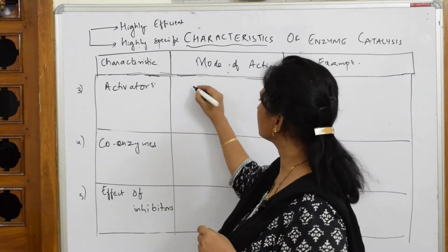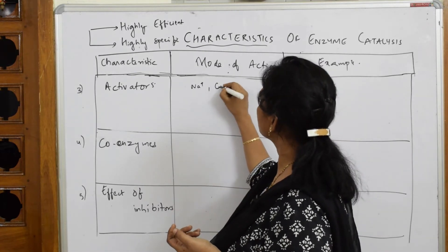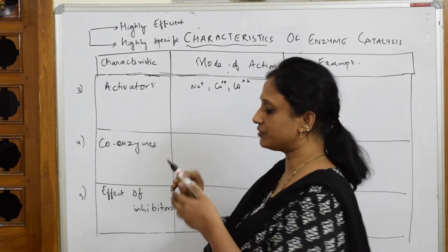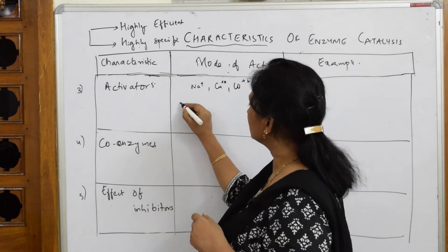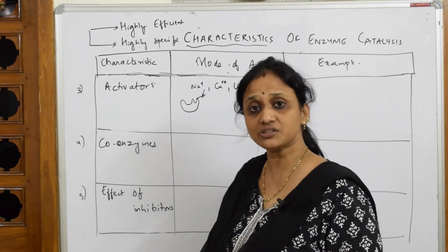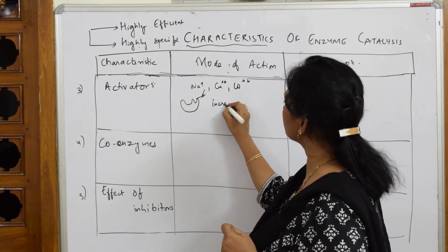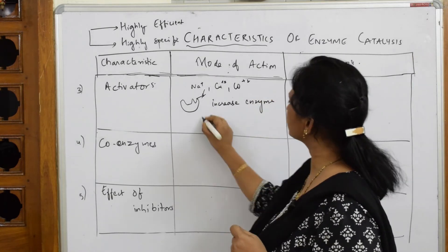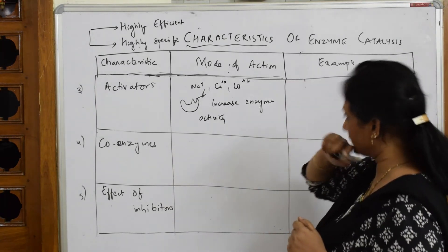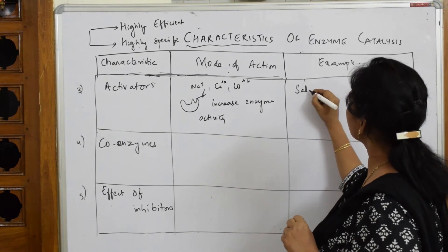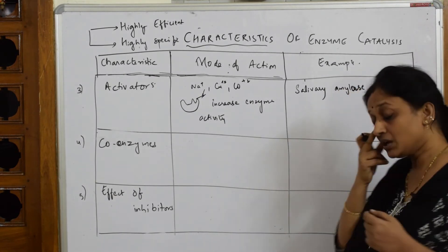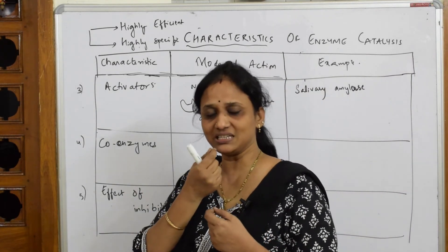When I speak about activators, these are smaller ions like Na⁺, Co²⁺, Cu²⁺ — these metal ions are going to fit into the active site of the enzyme. We know an enzyme has an active site. When these ions fix into the active site, they increase the enzyme activity. For example, when salivary amylase — released by salivary glands — is placed in a sodium chloride solution, these Na⁺ ions fix into its active site.